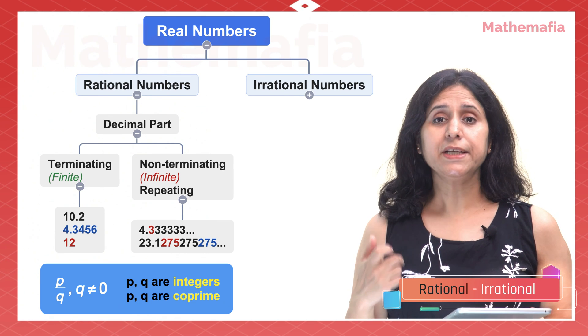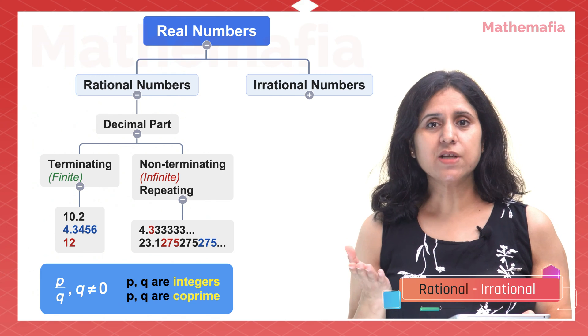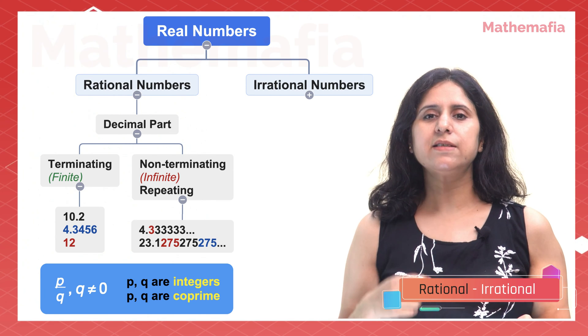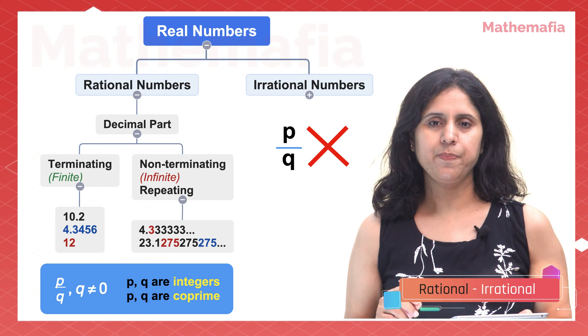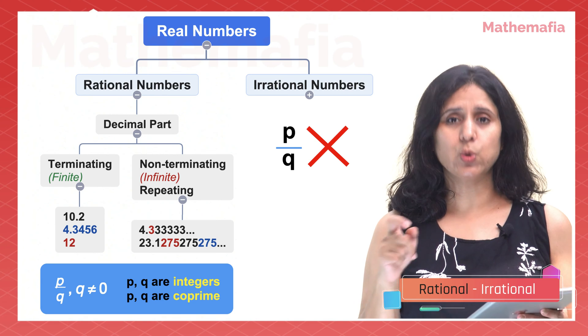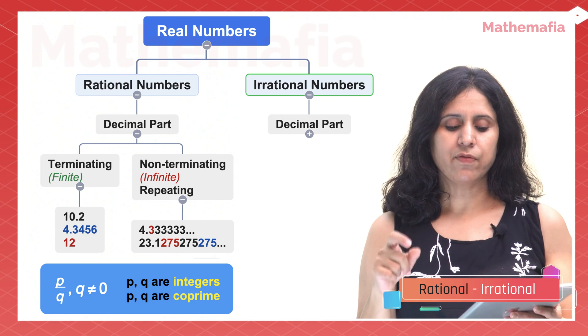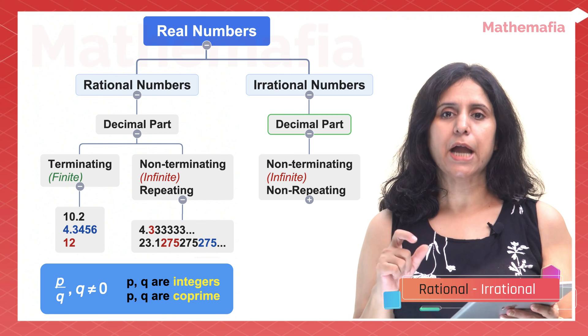So now it's very easy to define irrational numbers. Irrational numbers are those numbers which are not rational. Hence they are those numbers which cannot be written in the form p/q. In other words, irrational numbers are those numbers which have a decimal portion which is non-terminating and non-repeating.